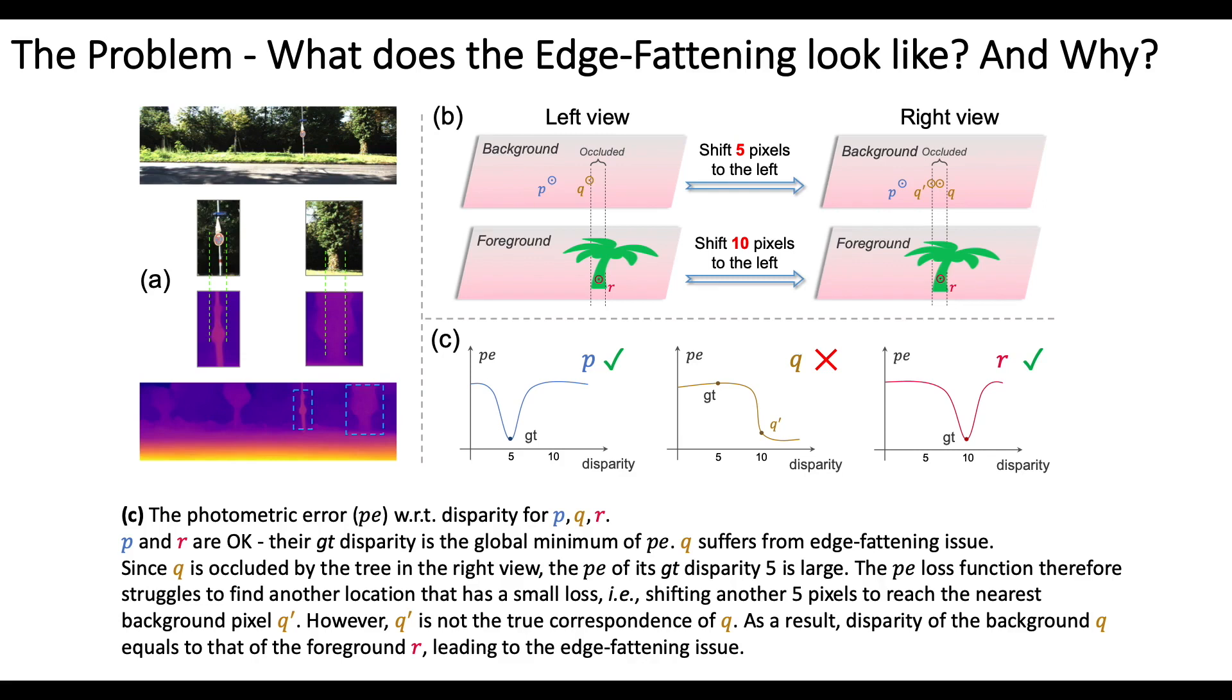The loss function therefore struggles to find another location that has a small loss, shifting another 5 pixels to reach the nearest background pixel Q'.